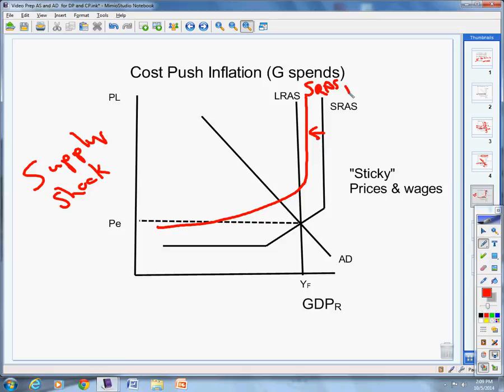What's happened? Well, we've gone into recession again. But, this time, instead of prices dropping some, prices actually go up. Not good, right? That's why it's called cost push inflation. We have inflation at the same time we're in a recession.